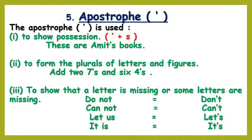Apostrophe. The apostrophe is used to show possession. For showing possession with a singular noun, we add an apostrophe plus the letter S. For example: these are Amit's books — it means all the books belong to Amit. This is Mrs. Chandra's house — it means the house belongs to Mrs. Chandra.